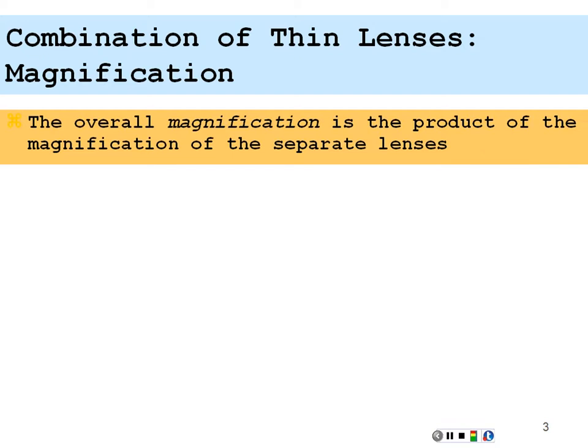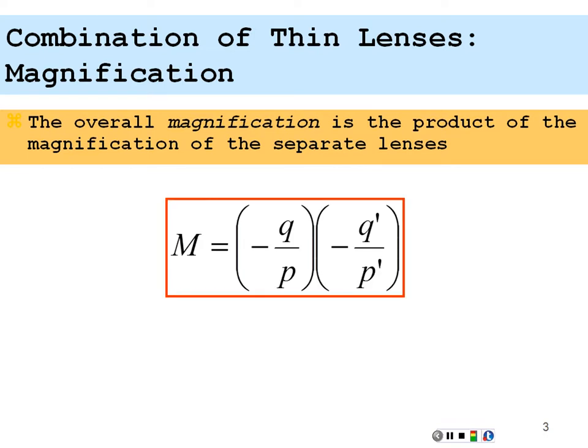If we have a magnification of this kind of setup with two thin lenses at a large distance like this, our overall magnification would be equal to the product of the two magnifications of each lens. So you have the first lens, negative Q over P, times the magnification of the second lens, negative Q prime over P prime. And that magnification would be our overall magnification of the two lens system.